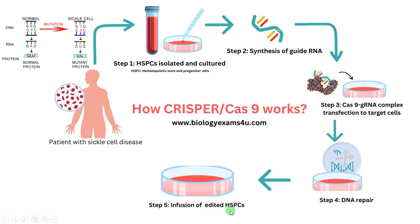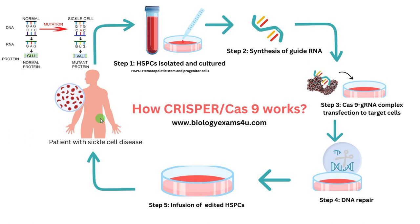Step 5 is infusion of these edited HSPCs back into the patient. We now have edited hematopoietic stem cells without the mutated sequence, and these are infused back into the patient. Within the body, these cells start synthesizing RBCs without this mutation — therefore normal RBCs. Thus this disease can be cured. This work is under clinical trial and seems very promising for curing sickle cell disease.